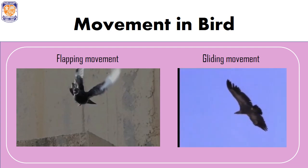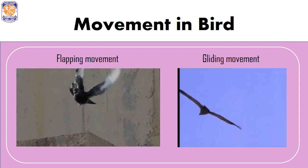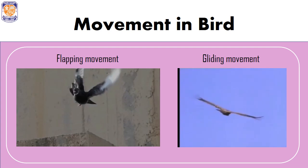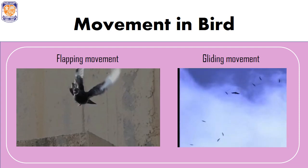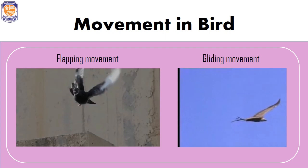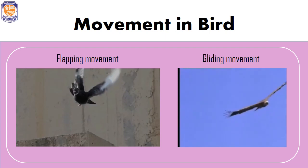In gliding movement, large birds are able to suspend themselves effortlessly in the air without flapping their wings, flapping only occasionally. Gliding movement is seen in birds like eagles and kites.